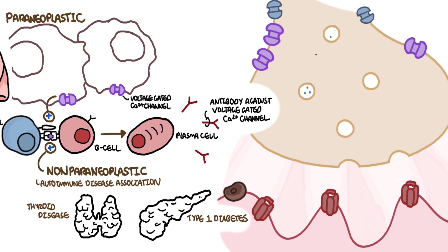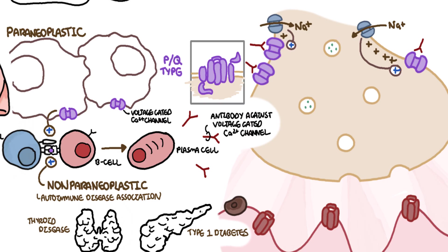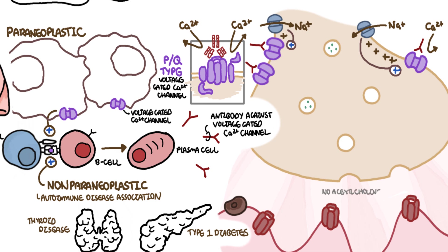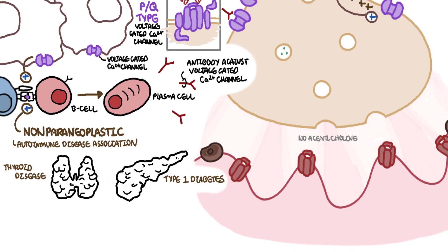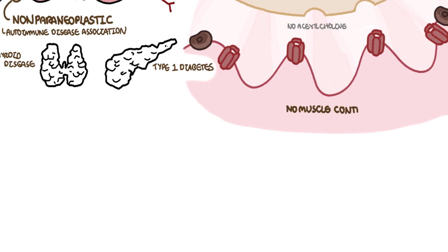In Lambert-Eaton Myasthenic Syndrome, these antibodies that are produced bind to the voltage-gated calcium channels at the terminal bulbs of motor neurons. They specifically bind to the P/Q-type voltage-gated calcium channels, preventing calcium influx and subsequently the release of acetylcholine into the synaptic cleft. Because there is no acetylcholine, there is no muscle contraction, and you will have absent reflexes.